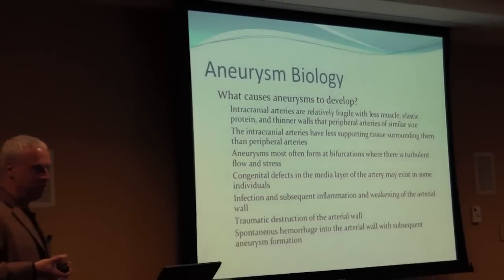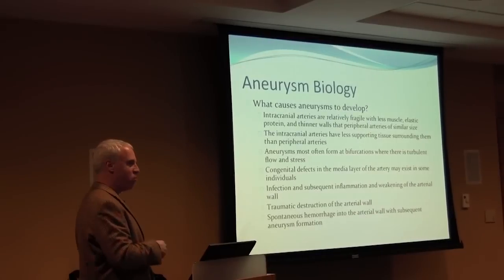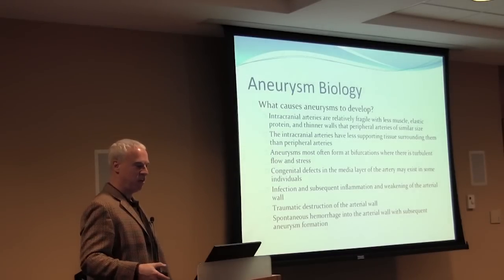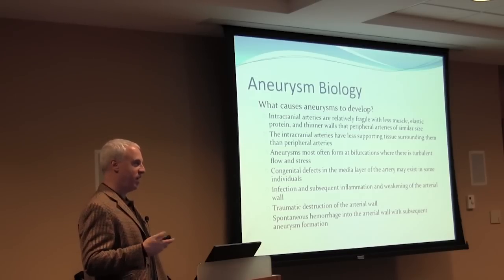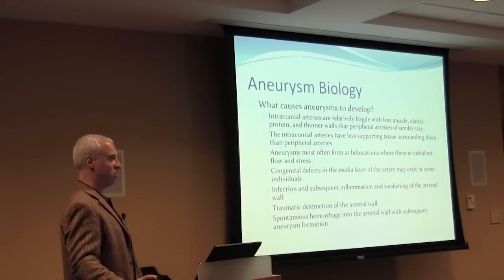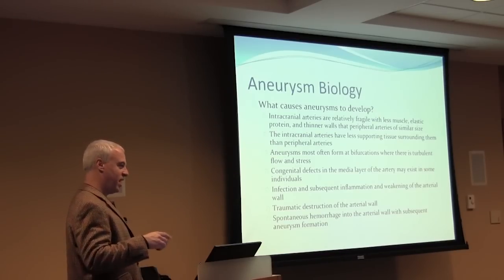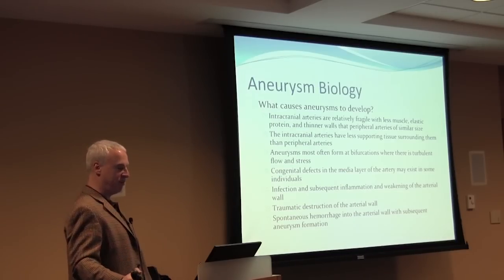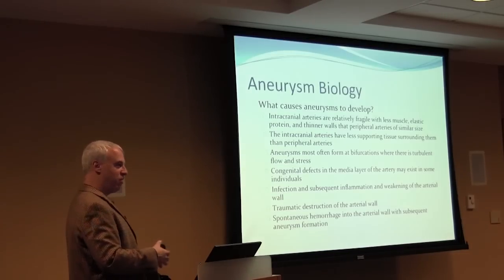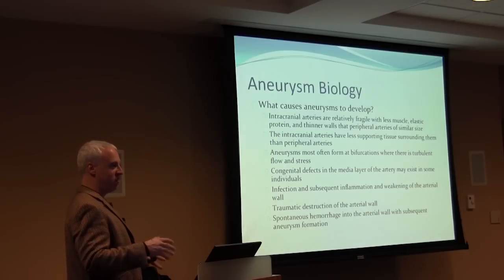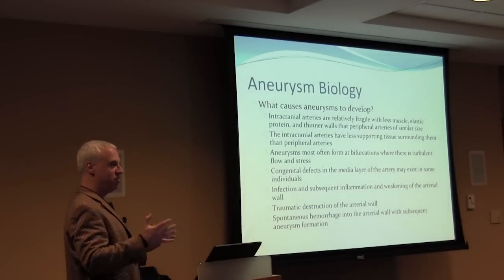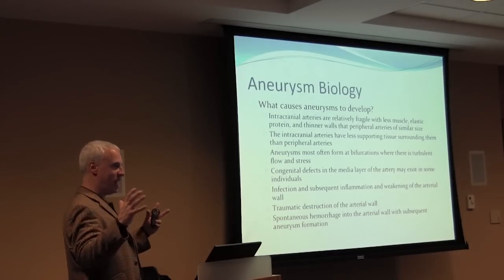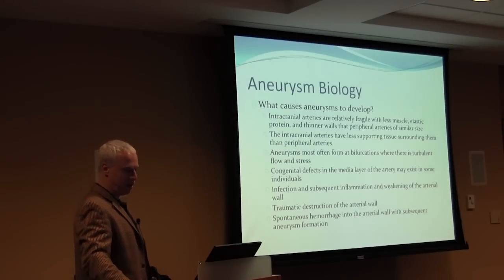What causes aneurysms to develop? Intracranial arteries are very fragile — unlike the aorta or peripheral arteries, they have much less muscle, less elastic protein, thinner walls, and therefore they're weaker. Yet they receive 30% of our blood flow with every heartbeat and are free-floating in the subarachnoid space with less supporting tissue. They don't have muscle around them; they're surrounded by brain that doesn't push on them much. So they expand more with each pulsation and have little external support to buffer the turbulence and flow.